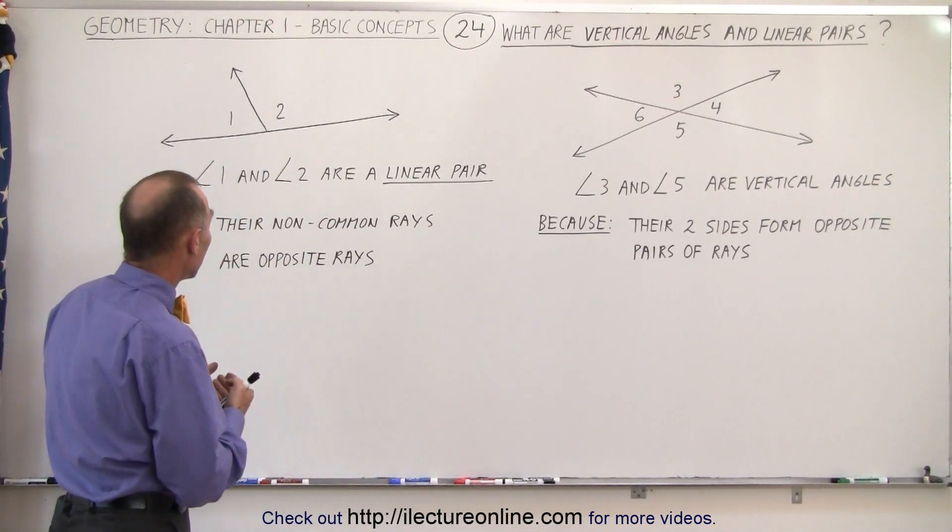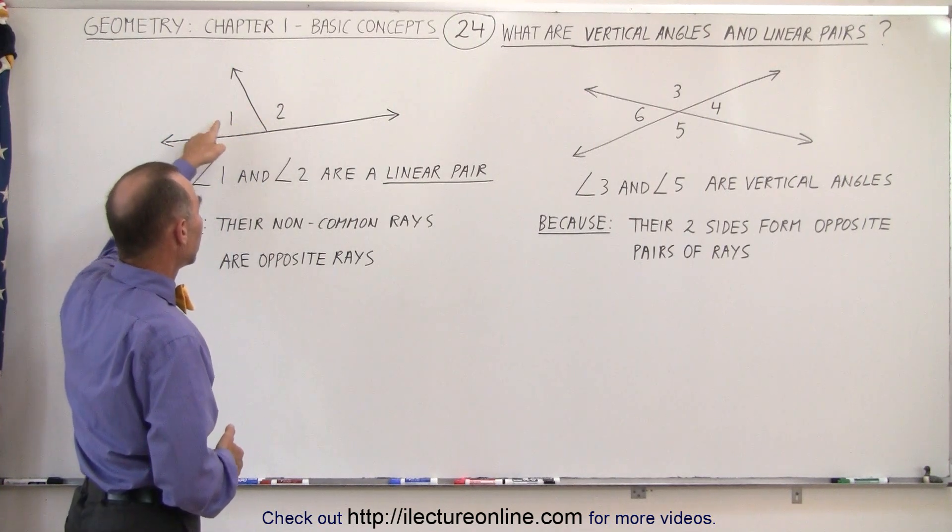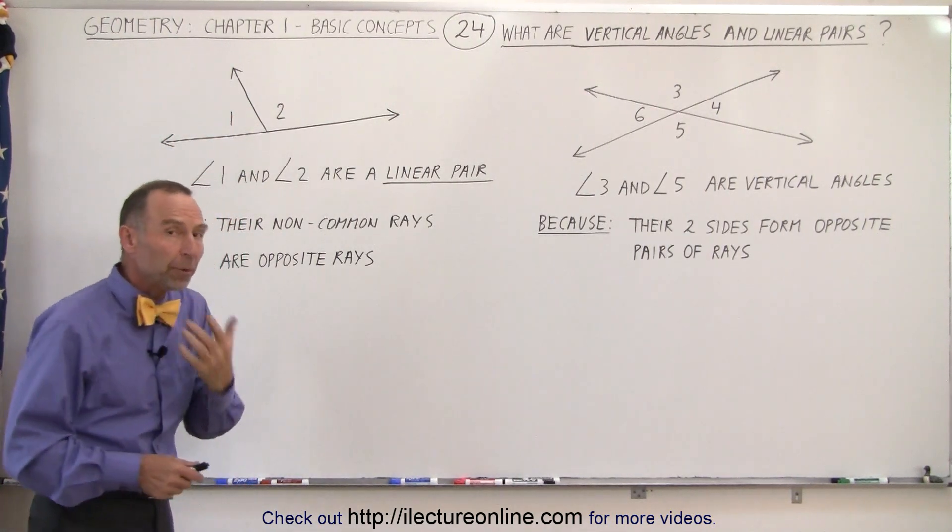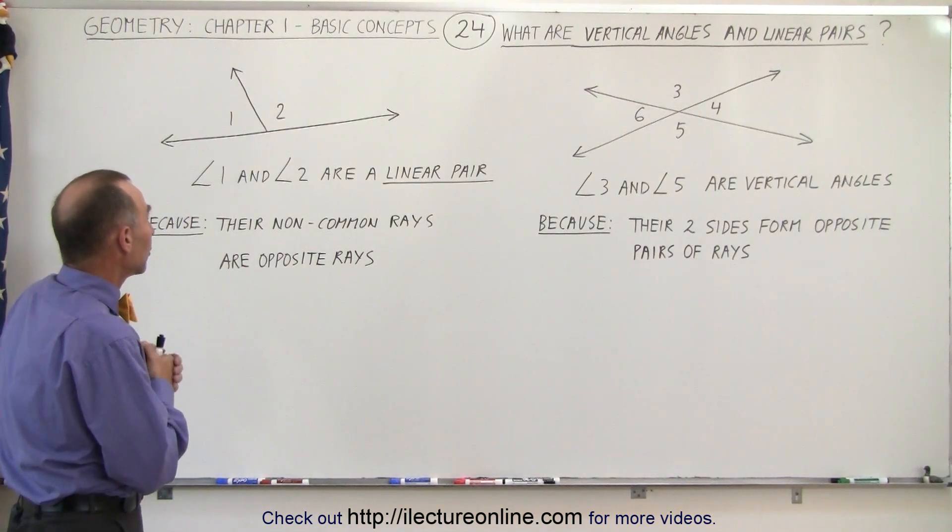Well, linear pairs, starting with those, can be seen here. We have two angles, angle 1 and angle 2, and you can see that those are supplementary angles because they add up to 180 degrees, at least their measures add up to 180 degrees.